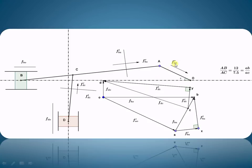Now we start the acceleration diagram. The first vector is the radial acceleration of A with respect to O. Mark the fixed point O, and from O draw a line parallel to this vector to a suitable scale — this gives point A, representing the acceleration of A with respect to O. The second vector is the radial acceleration of B with respect to A. Since A is known, from A draw a line parallel to this vector; AX represents the radial acceleration of B with respect to A. From X draw a line parallel to the tangential acceleration, whose magnitude and direction are not yet known.